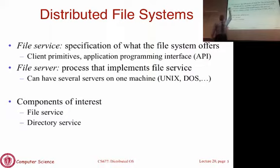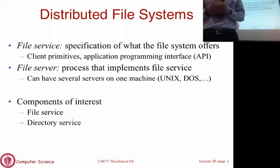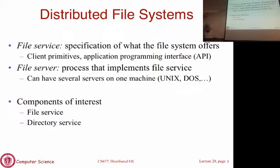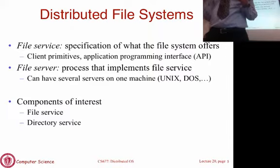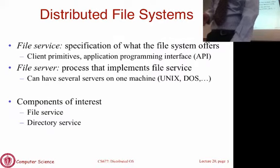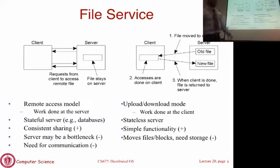The file service is the API or interface your distributed file system provides to clients — that is how clients access data. The file system itself spans multiple machines, and each machine that provides access to locally stored data is referred to as a file server. The collection of file servers together implements the interface of the file service. The API or interface should be separate from the implementation or the number of machines used.